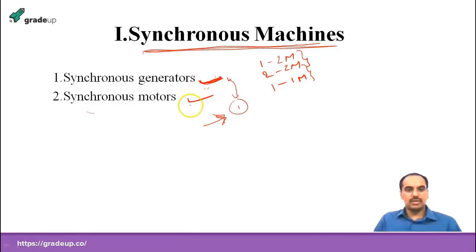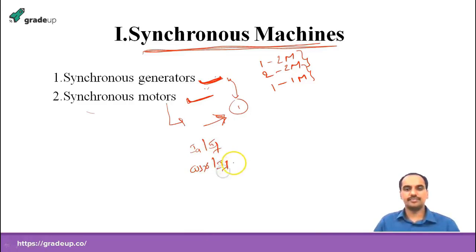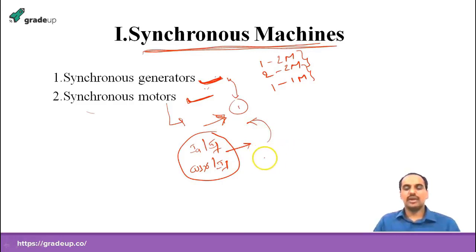Once you understand synchronous generators, then come across synchronous motors. Construction-wise, synchronous motors are the same as synchronous generators. In synchronous motors we need to come across the characteristics — armature current versus field current, power factor versus field current, and also V-curves and inverted V-curves. You may get one question here, and also excitation circles and power circles — these two are also important.